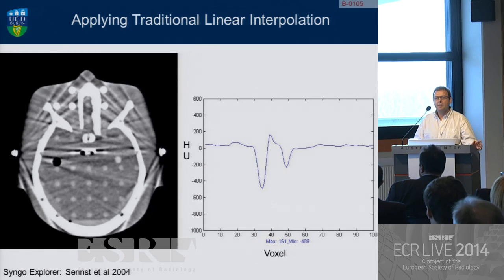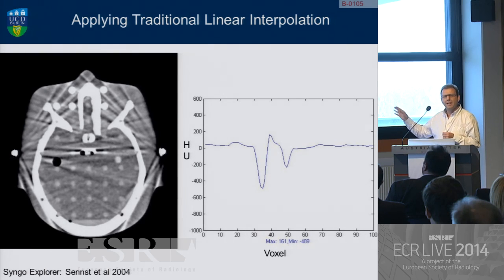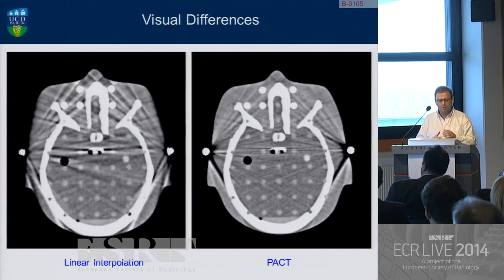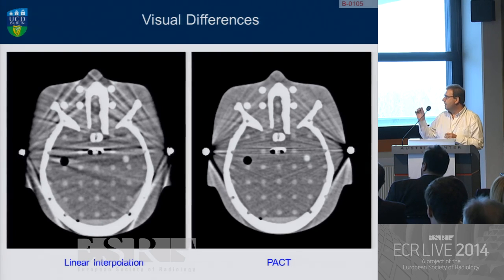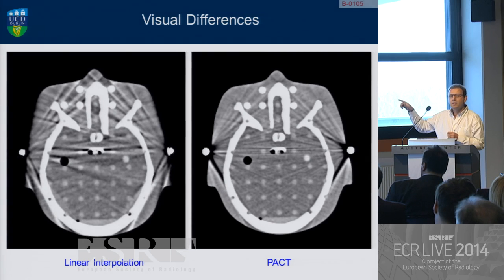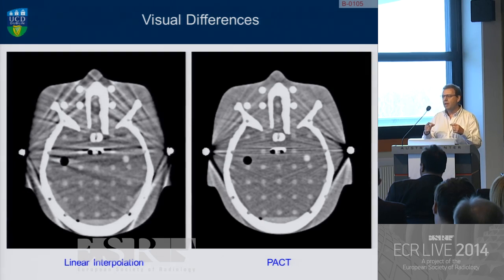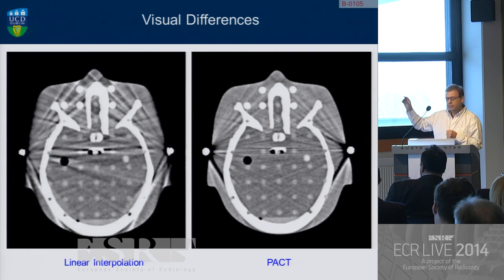If we apply a commercial metal artifact reduction routine — not iterative and not dual energy, this is conventional linear interpolation — we can see definite suppression of the artifact, but we can see some distortion in the voxel information. Applying the predictive artifact correction technique, we actually see good suppression of the primary artifact, and the pattern looks quite similar. Linear interpolation shows good suppression of the primary artifact visually, but we can actually see a worsening of other artifacts, particularly in the frontal or sinus area. This is because linear interpolation affects every single projection in the data set, as we're traveling through the sinogram and removing the entire metal data. Whereas the PACT algorithm only focuses on the overlap region, so we see good suppression of the primary streak but no influence whatsoever on the ancillary streaks or artifacts.